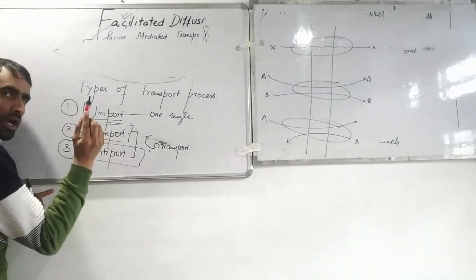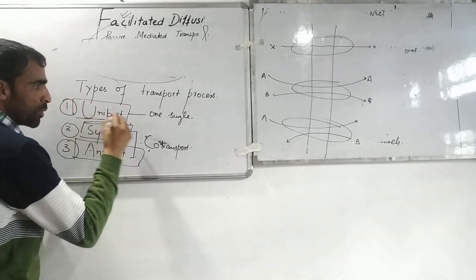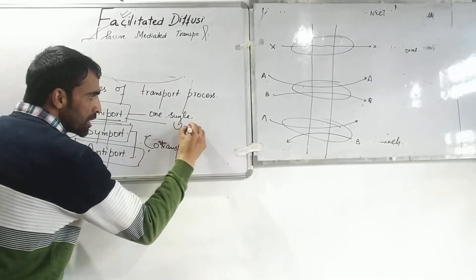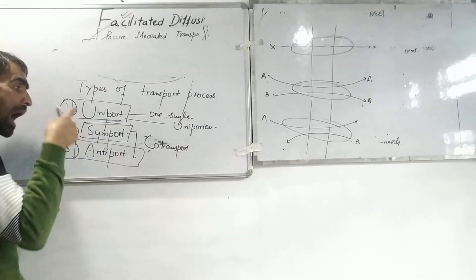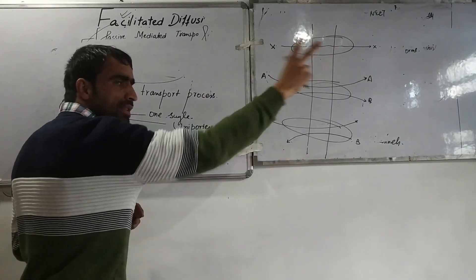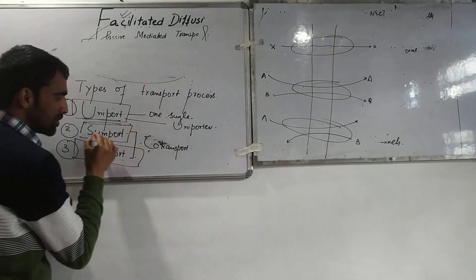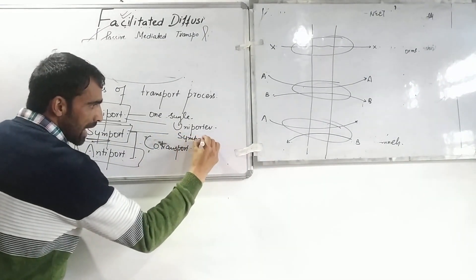If one molecule passes independent of another, this is uniport. If two molecules pass in the same direction into the cell, this will be simport.